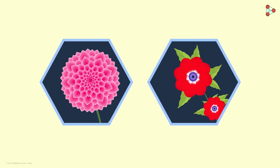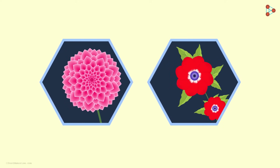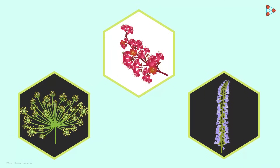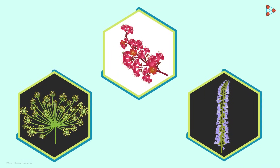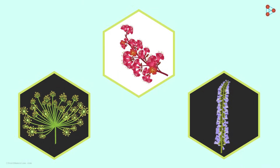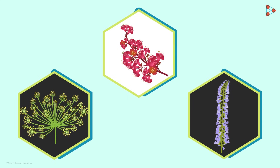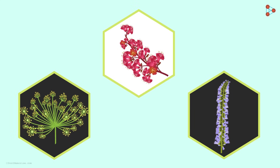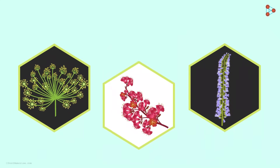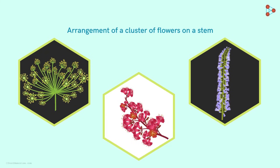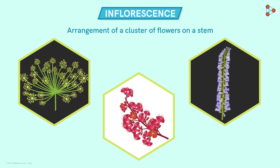Flowers come not only in a variety of shapes, but also in a variety of types. Have a look at these flowers — aren't these beautiful masterpieces different from the conventional ones that we usually glance at? Since they are totally different, this type of arrangement is given a special name. Such an arrangement of a cluster of flowers on a stem is called inflorescence. Let's understand this beautiful concept in detail.